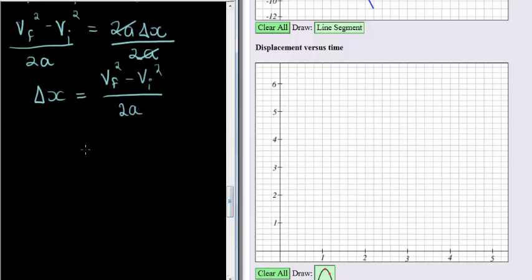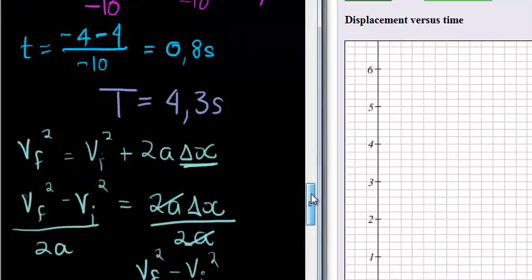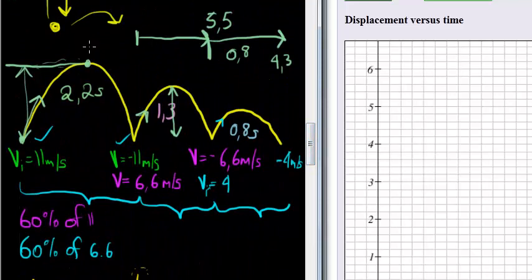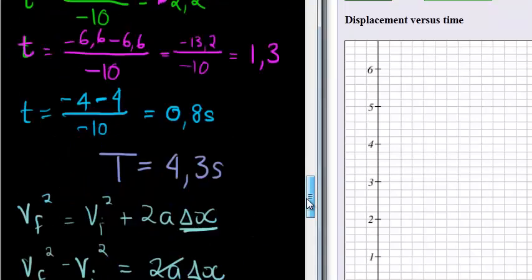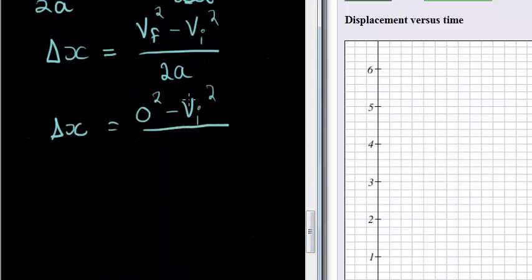So delta x equals v_f² minus v_i² divided by 2a. But now what I want to show you is which future velocity are we going to use? Remember, we are actually now at the maximum height. The velocity at this point, or the future velocity at this point, is always 0. When you're trying to work out maximum height for a projected object, it is always future velocity 0. So this is going to be 0 squared, so that's going to cancel away.